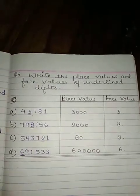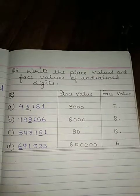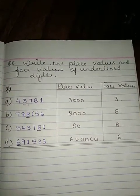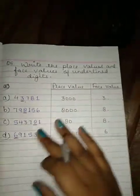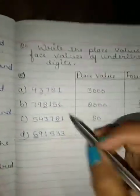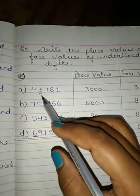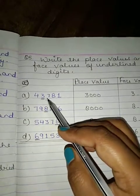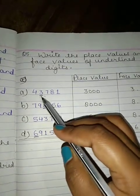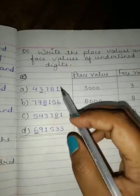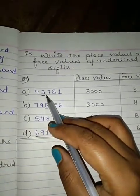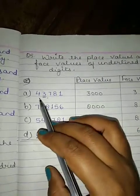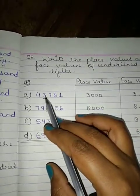The last question for this exercise is Question 5: Write the place value and face value of the underlined digit. Some numbers are given and in each one a digit is underlined. We have to tell the place value as well as the face value of that underlined digit. Place value means the place of the digit; face value is the digit itself.